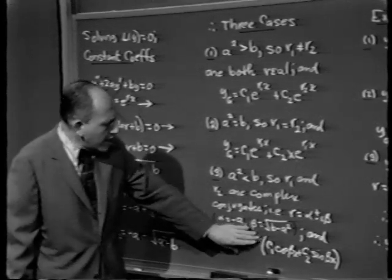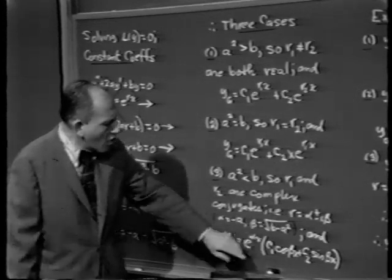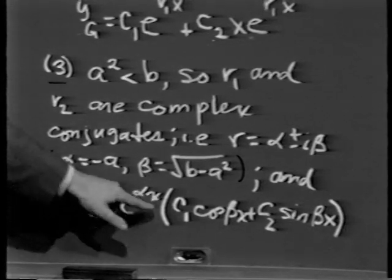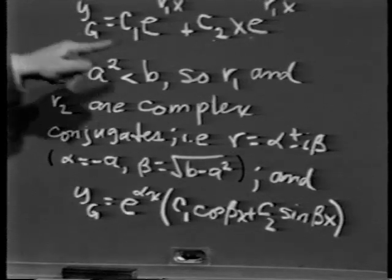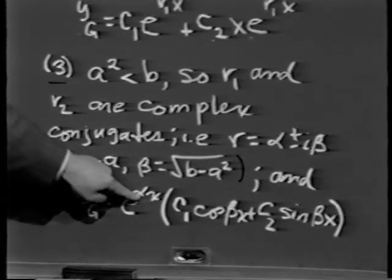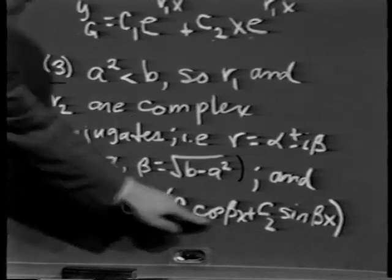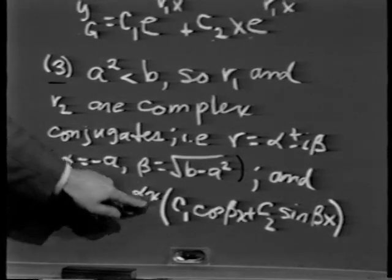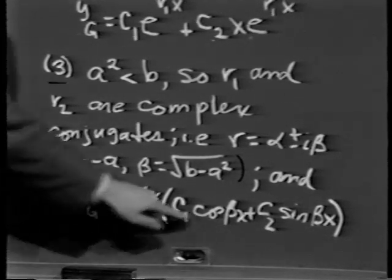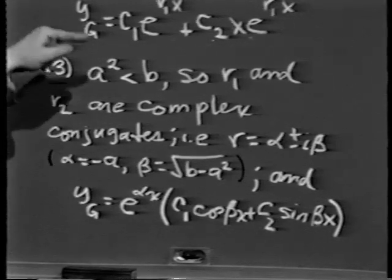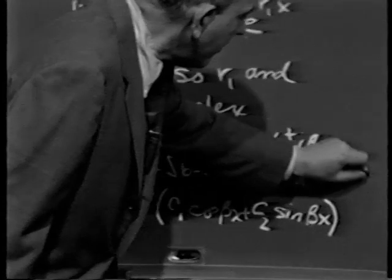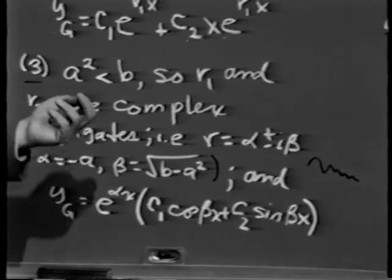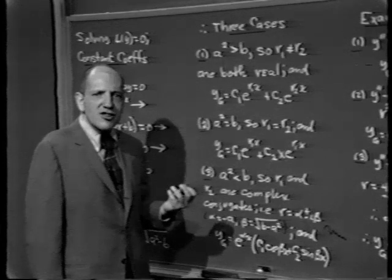Coming down to Case 3, if alpha happened to be 0 — that is, if r were purely imaginary — the solution would be purely oscillatory motion. If alpha is not 0, then e to the alpha x times c1 cosine beta x plus c2 sine beta x is an oscillation that is blown up if alpha is positive, or shrunk if alpha is negative. If alpha is negative, as x gets large e to the alpha x goes to 0, pulling the expression down to 0. That's damped oscillatory motion — oscillation with a shrinking amplitude.